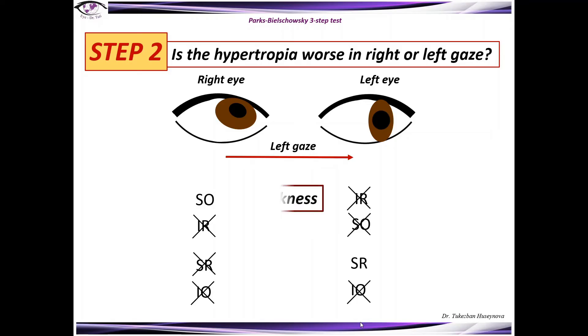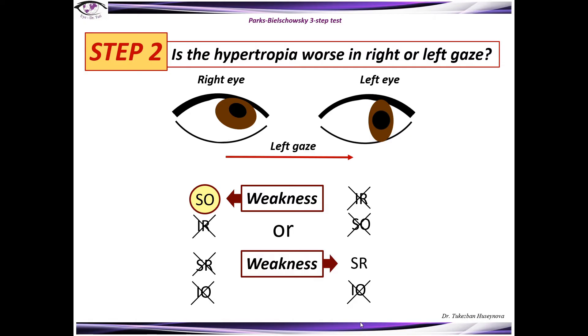We now have in mind that we have a possible weakness of the superior oblique of the right eye, or a possible weakness of the superior rectus of the left eye.